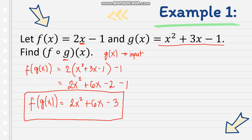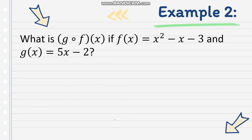In doing composition of functions, you identify which one is the input and use it to evaluate the other function. So f of g of x equals 2x squared plus 6x minus 3.